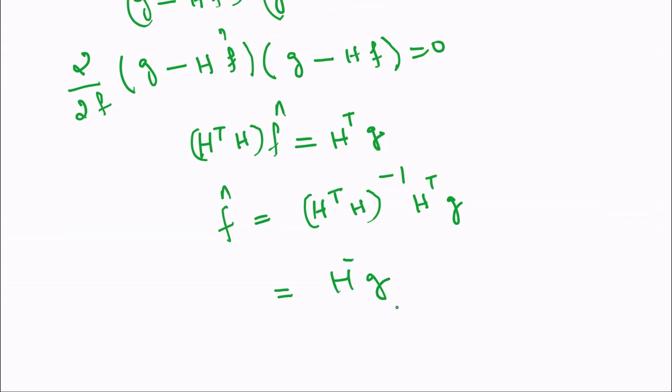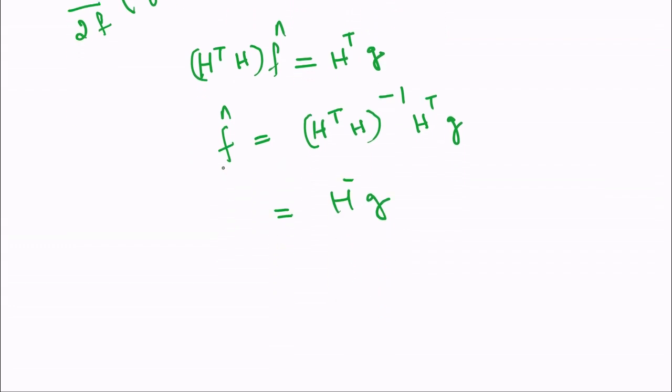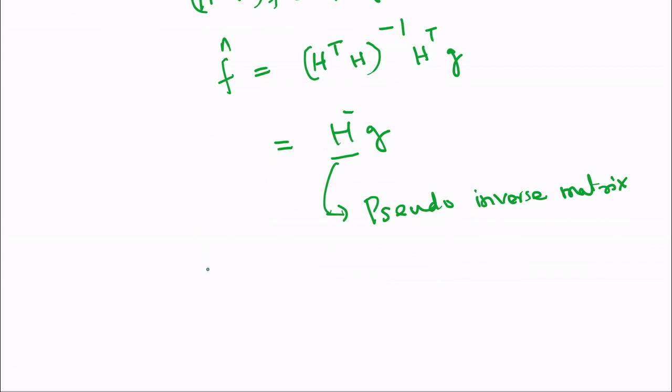What this equation actually gives us is we are performing one estimate for the image, that is f hat is equal to h minus g. This h minus is known with a name called the pseudo inverse matrix, or the pseudo inverse of h. By this example we can find the value of f hat. Now we got the relation f hat is equal to h minus g.